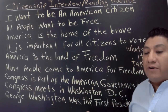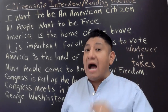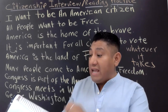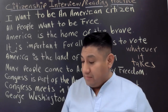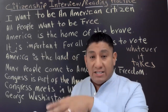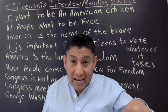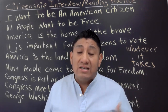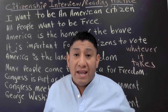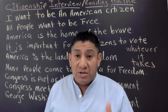Many people come to America for freedom. Congress is part of the American government. Congress meets in Washington DC. George Washington was the first president. These are the 10 most common sentences; however, they are not the only ones. In our material we have about 70 phrases that they could possibly ask you to read or write. Stay tuned and hit like on this video if you feel it has helped you, even a little bit.